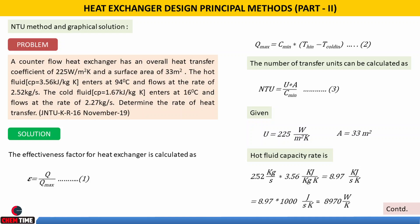First, we write the formula for the effectiveness factor ε = Q / Q_max. As discussed, Q_max = C_min × (T_H,in − T_C,in), where C_min is the minimum of the capacity rates of the hot and cold fluids. We need to use a graph that plots NTU for different values of C_min/C_max, which gives the effectiveness factor.